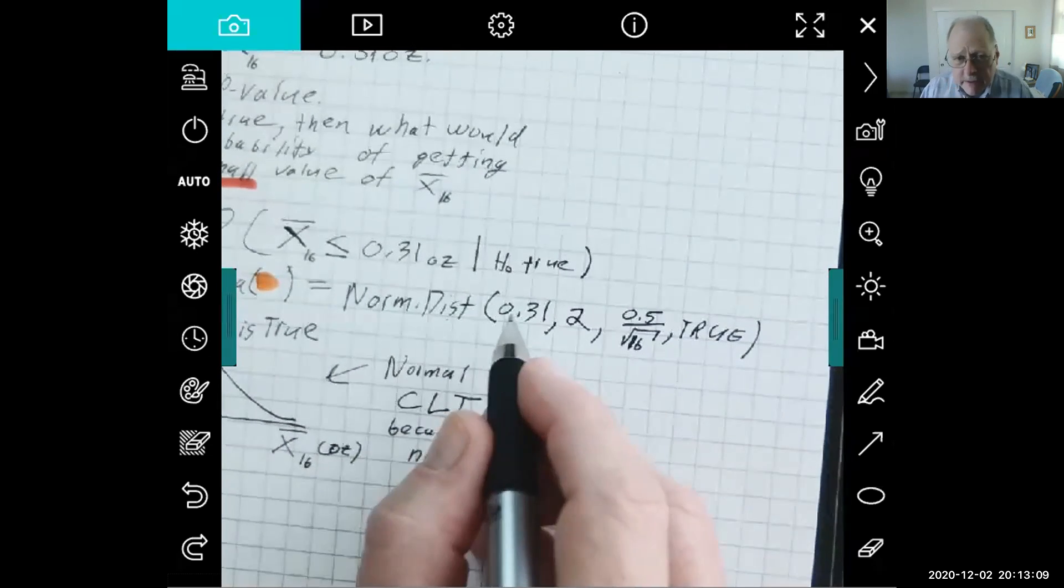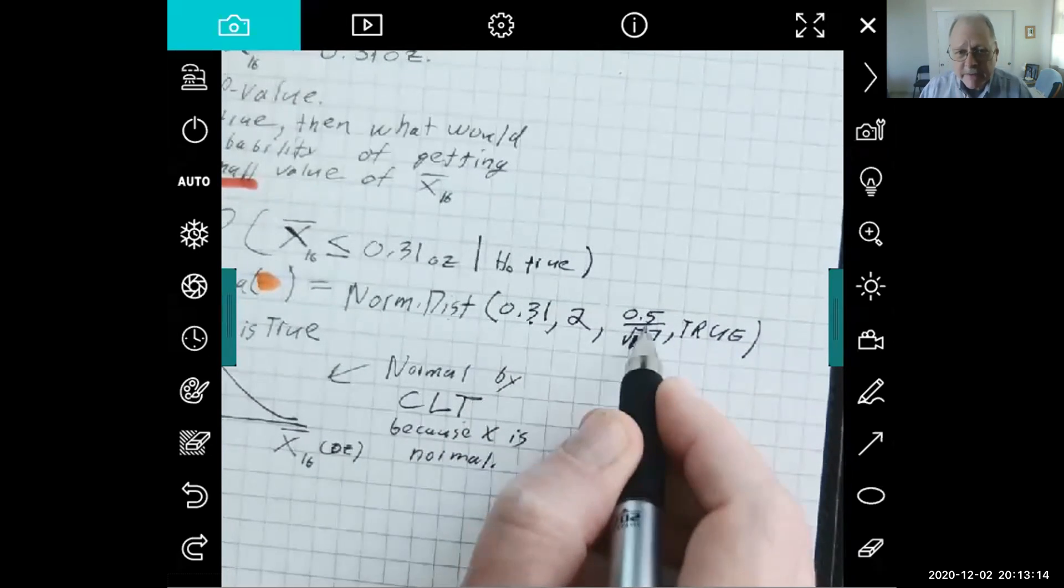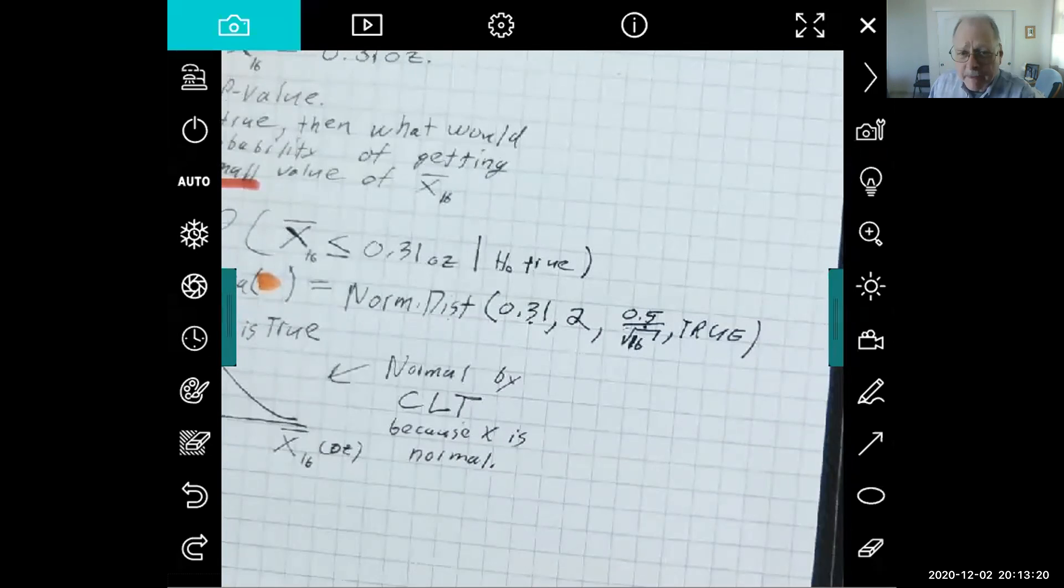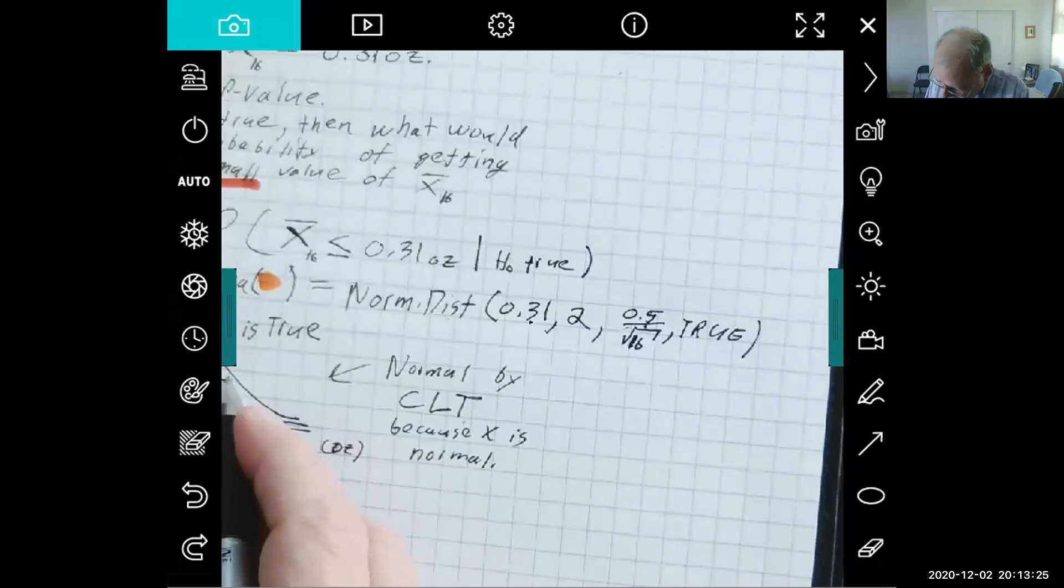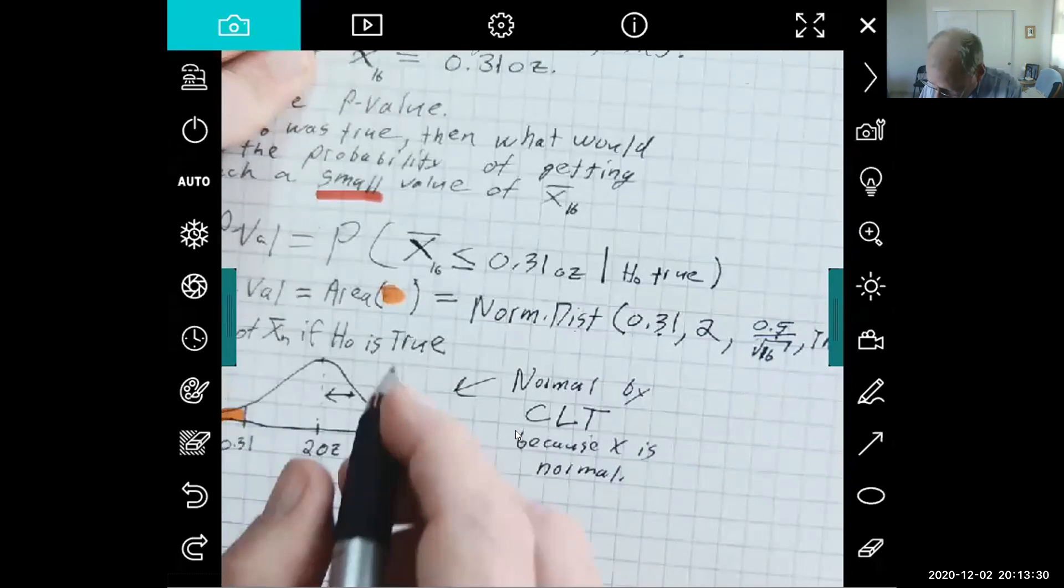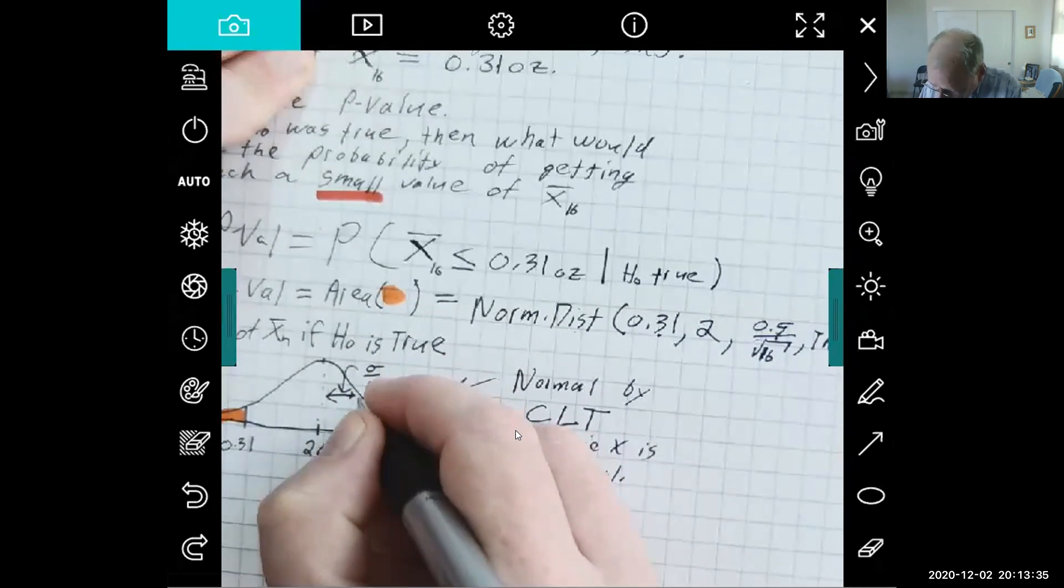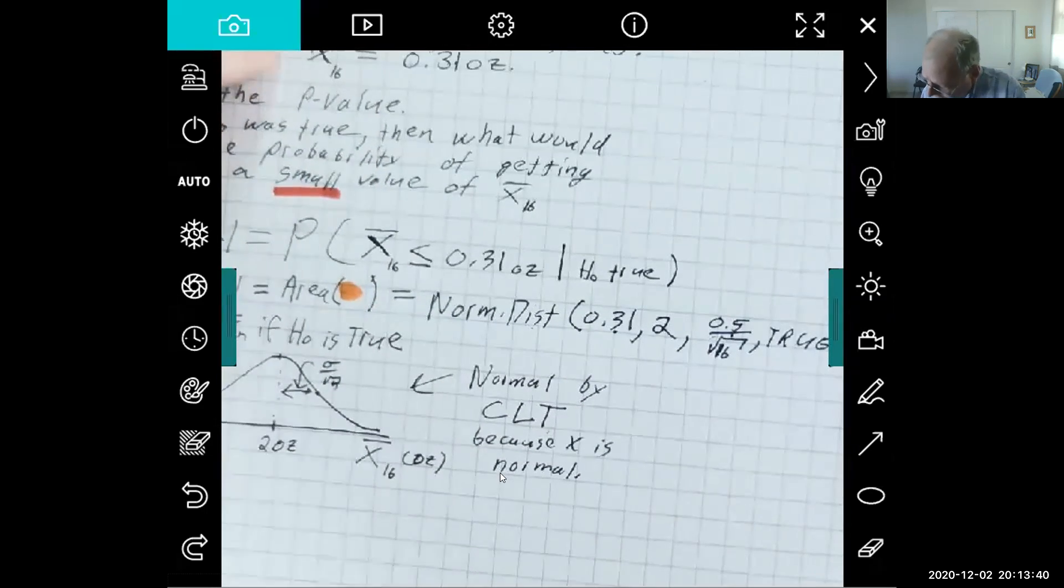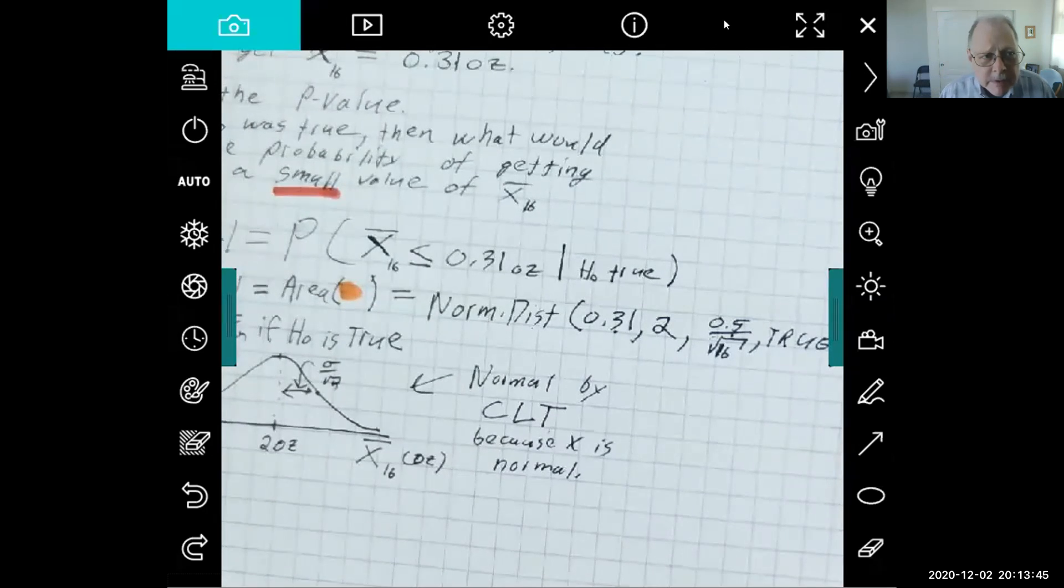So what's the area to the left of 0.31 if the mean is 2 and the standard deviation is 0.5 ounces for x? But you divide by the square root of n to get the standard deviation of this curve, the distribution of x-bar. The distance out to the inflection point in the curve is sigma over root n. So you type this into Excel and we'll see what we get.